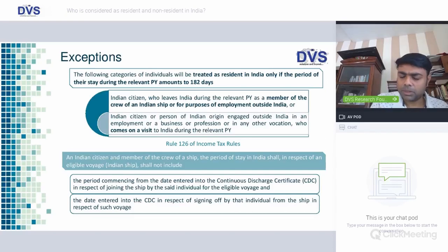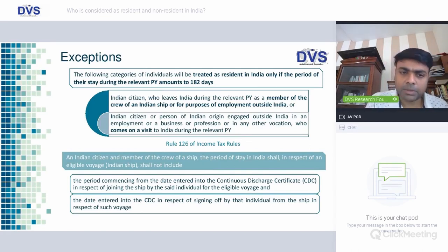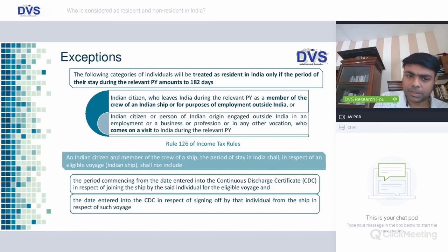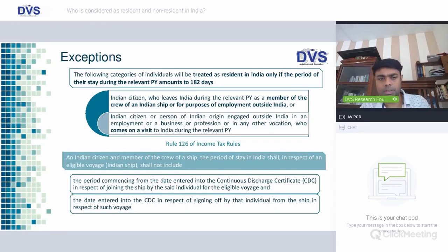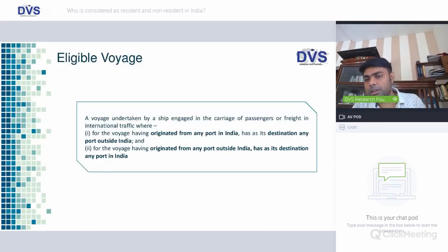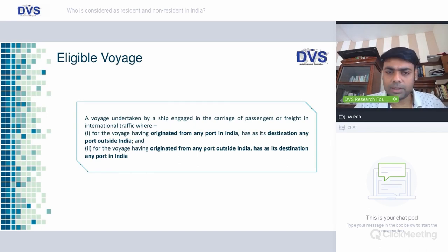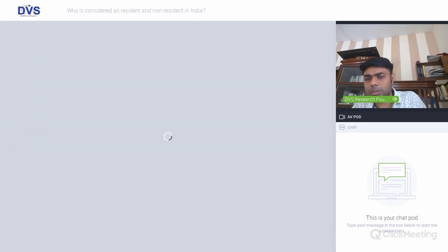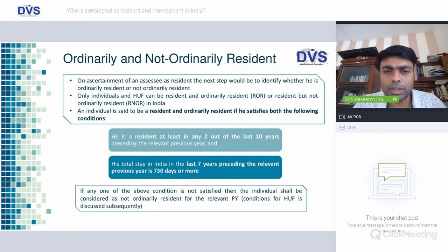Rule 126 deals with an Indian citizen who is a crew member of an Indian ship. The period of stay in India shall, in respect of an eligible voyage, not include the period from the date entered in the Continuous Discharge Certificate (CDC) for joining the ship to the date of signing off. The CDC records entry and exit dates. An eligible voyage is one where the ship leaves a port in India and goes to a port outside India, or originates from outside India with a destination port in India.